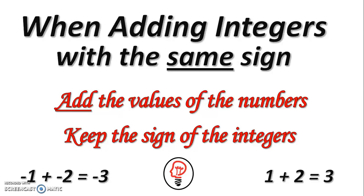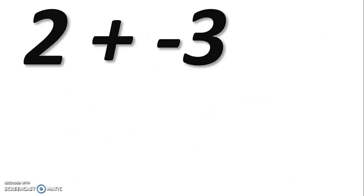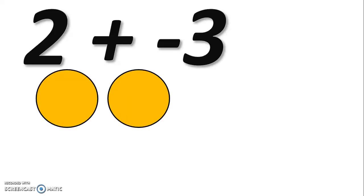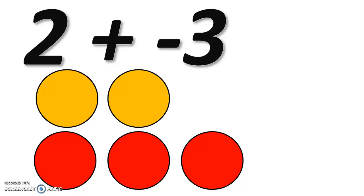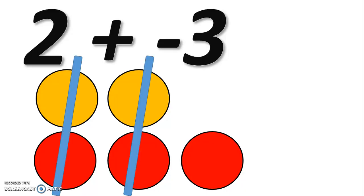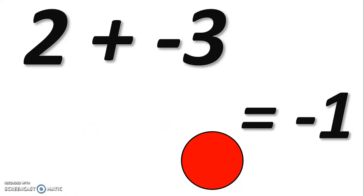Now we're going to move on to adding integers with opposite signs. Use your counter chips to build two plus negative three. You should have two yellow counter chips for positive two and three red counter chips for negative three. Remember, a positive one and a negative one combine to make zero, so we take one yellow and one red and cancel them out. We have two such pairs to cancel, and after removing them, our answer is negative one.